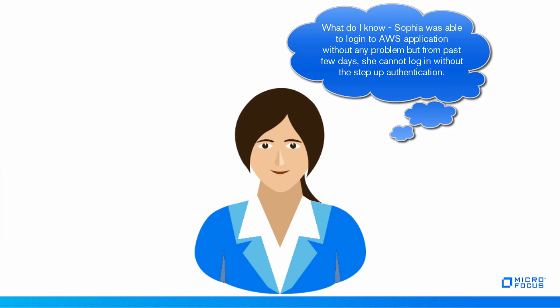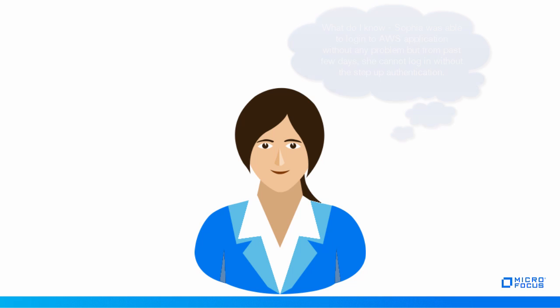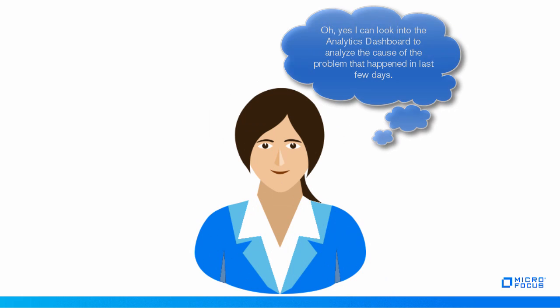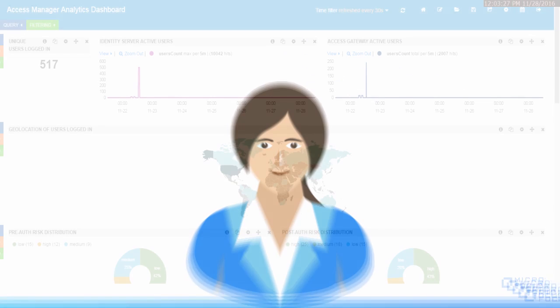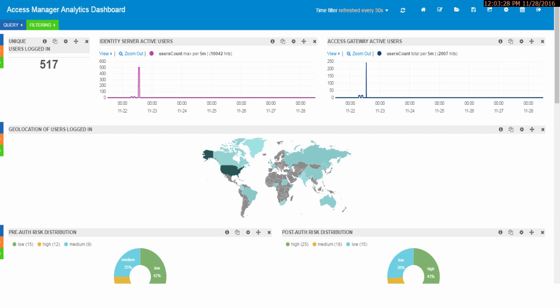What do I know? Sophia was able to log in to the AWS application without any problem, but from the past few days she cannot log in without the step-up authentication. I can look into the analytics dashboard to analyze the cause of the problem that happened in the last few days.